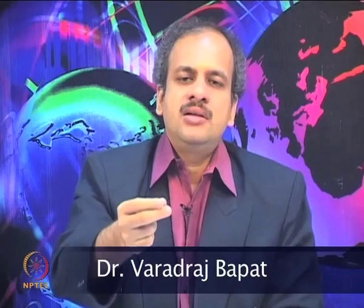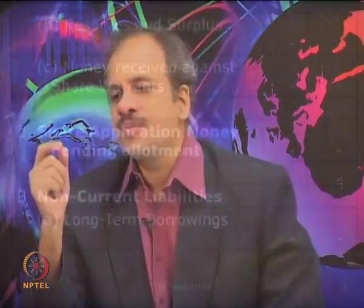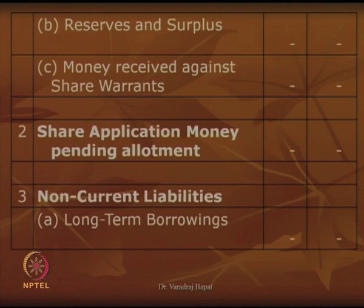For example, if an employee has an employee stock option, they can pay some money and get shares of the company. Till the time the money is converted into shares, it is shown in the balance sheet as money received against share warrant; once converted it becomes part of share capital. The second heading is share application money pending allotment — when a company invites outsiders to subscribe to its shares and people pay money, the money collected till the shares are given is known as share application money pending allotment, but ultimately it will get converted into share capital.